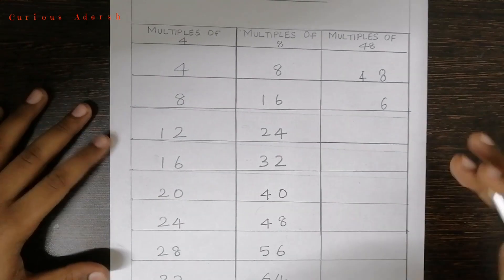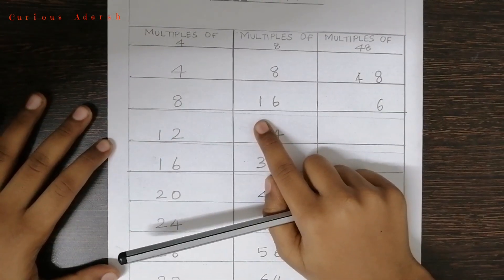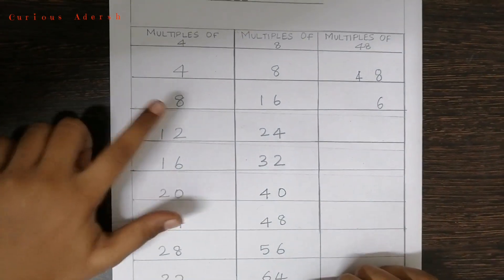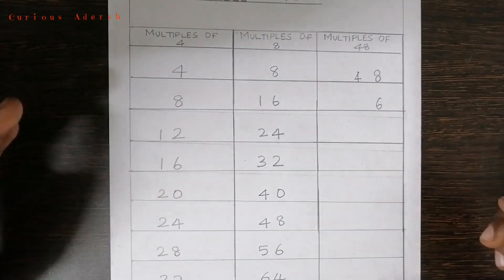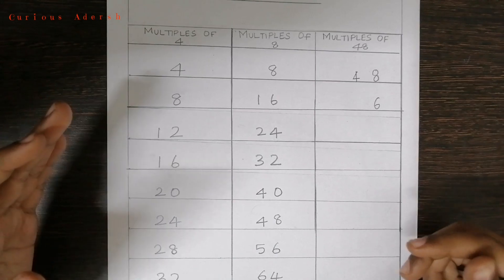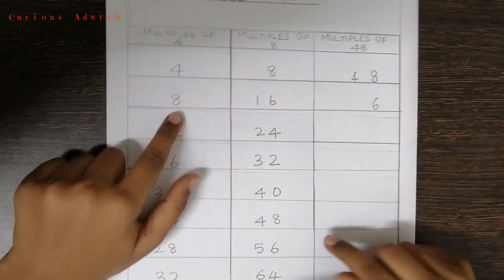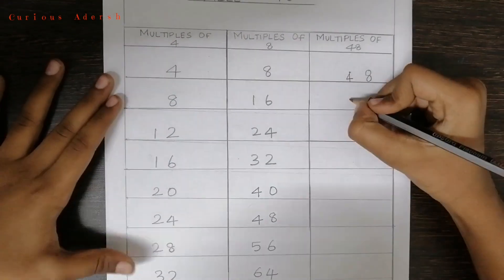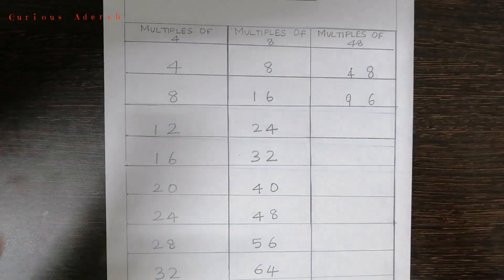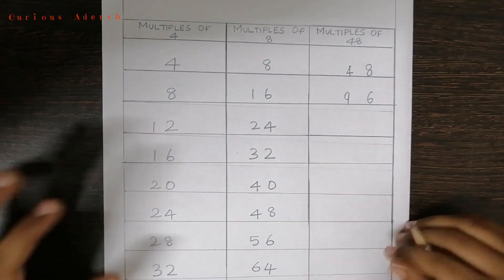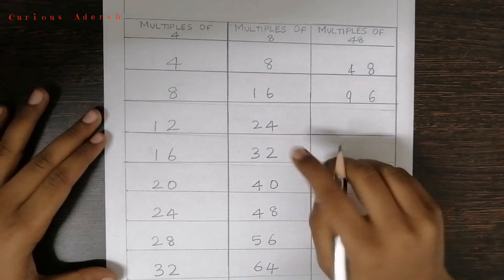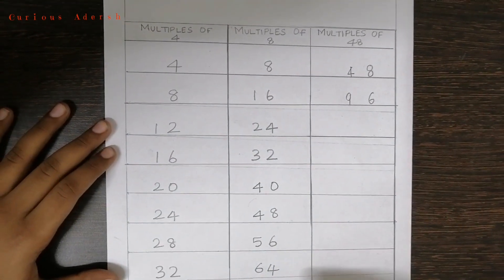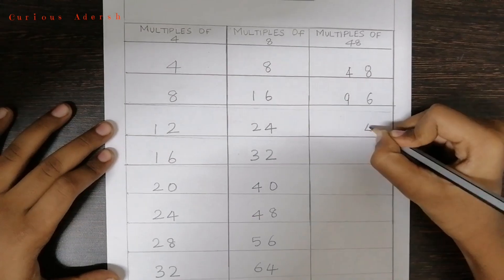Then add the tens digit of the right side number, which is 1, with the ones digit of the left side number, which is 8. 8 plus 1 is 9 — so we get 96.